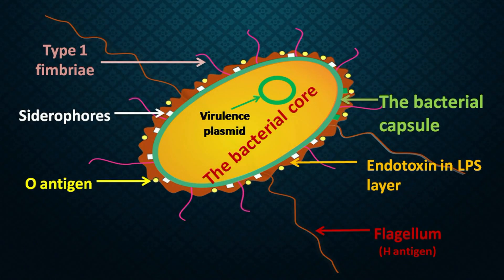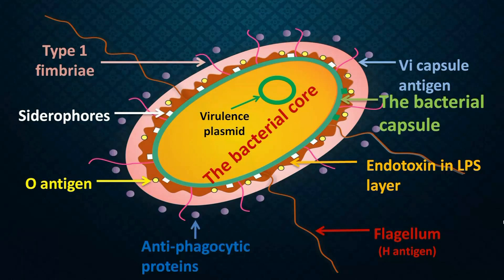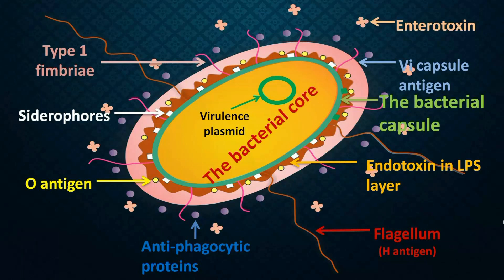Over this lipopolysaccharide layer there is another layer of protein called V1 capsule antigen. So you see a core, capsule, endotoxin layer, and another layer — the bacteria is actually packed inside many layers. Some bacteria also express antiphagocytic proteins over the outer capsule, which destroy the macrophages. And then there is a certain amount of enterotoxin secreted by the bacteria which surrounds it.